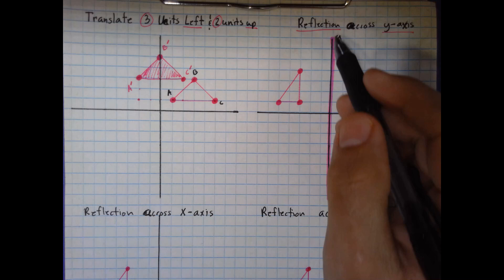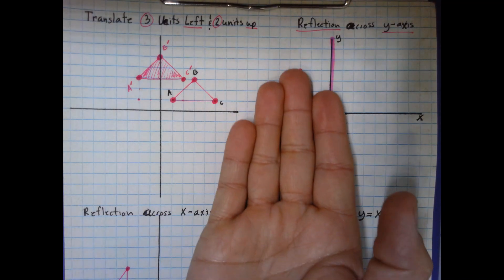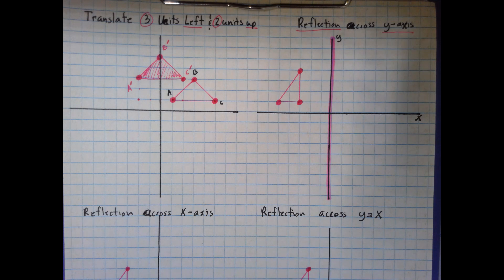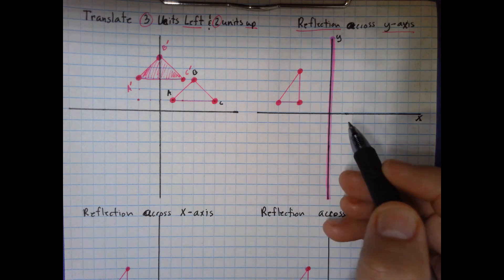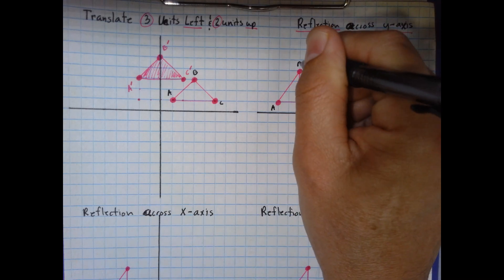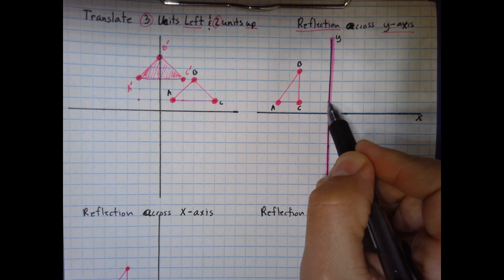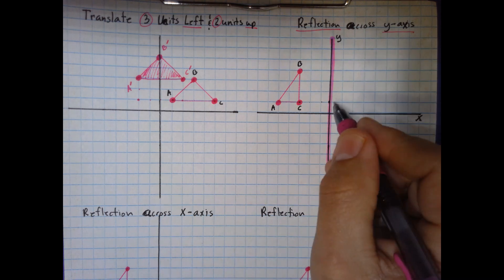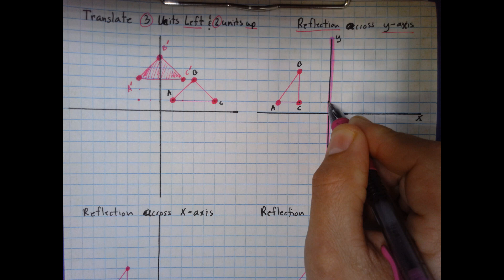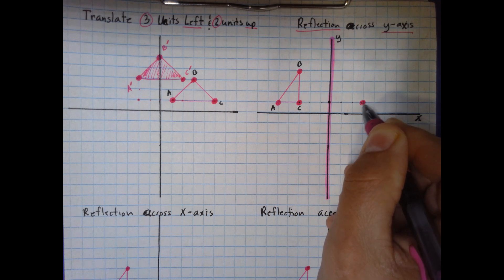When we say reflection, imagine this shape is a pancake. You slide a spatula under it, pick it up, and flip it over to the other side. For a reflection over the y-axis, all you have to do is count how far each point is from the y-axis. For point C, I count three units to the left of the y-axis, so I reflect it three units to the right: one, two, three. I place C prime there.